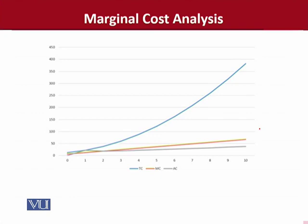Jo blue color mein hai, woh aapke paas total cost function hai. Aur jo orange color mein hai, that is the marginal cost function. Aur average cost function jo hai, woh hai gray color mein. Aur yeh apni theory ko follow kar rahe hain, because aap dekh sakte hain ke jo marginal cost hai, woh average cost ko cut kar raha hai, just like it used to do before — jo hum standard theory mein padhate hain — ke MC aam taur par AC ko niche se cut karta hai.